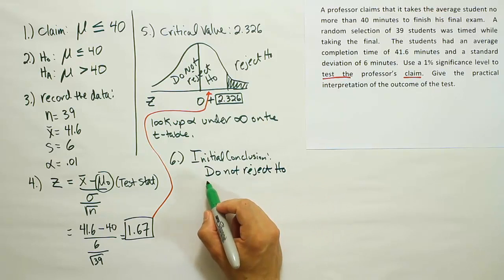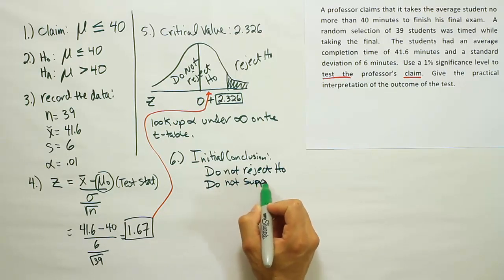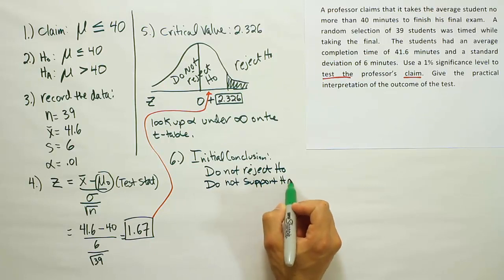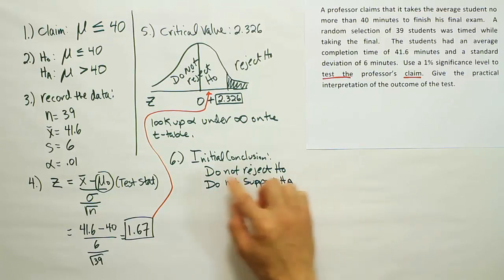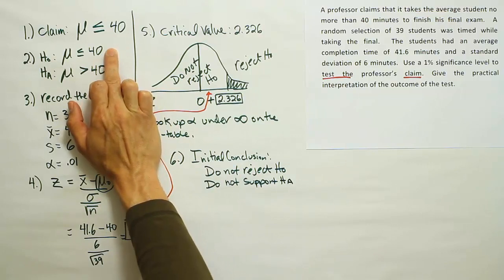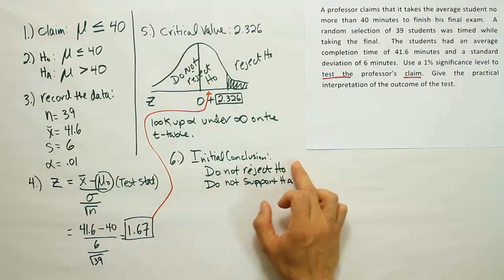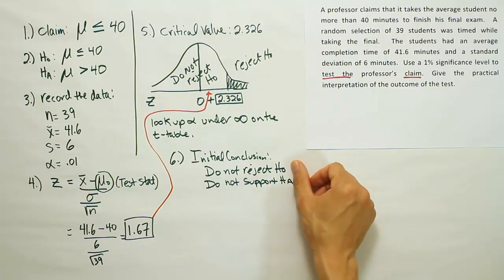If we're not rejecting H0, we do not support HA. All right, remember these go hand in hand. If you're not rejecting H0, you're not supporting HA. Not rejecting H0 is like saying, hey, this evidence doesn't conflict with H0. So H0 is okay. If H0 is okay, then HA cannot be okay. So you should not support it because remember, these are in competition. If one's good, the other must be bad.